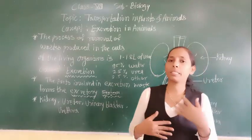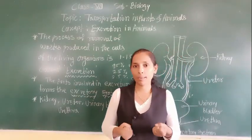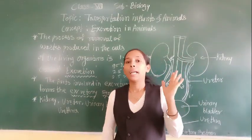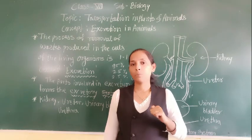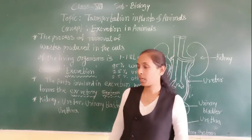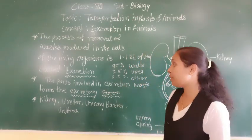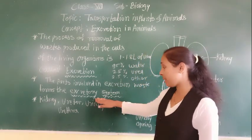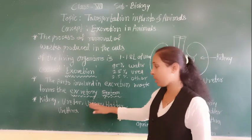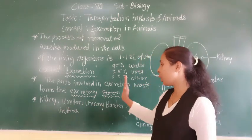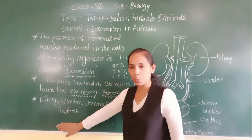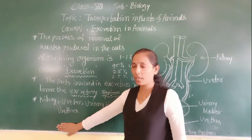Along with that, the lungs also help to throw out carbon dioxide and our skin helps to throw out sweat. But in the excretion system specifically, the excretion organs are kidney, ureter, urinary bladder, and urethra.